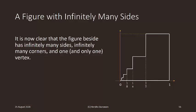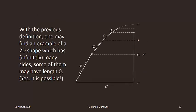It is now clear that the figure beside has infinitely many sides, infinitely many corners, and one and only one vertex, which is the origin.